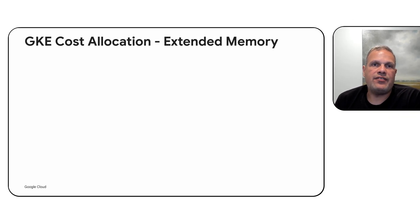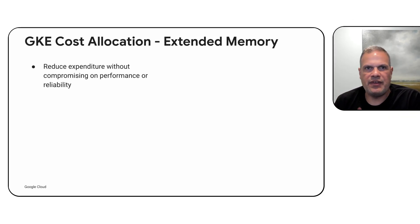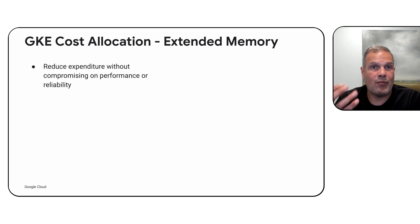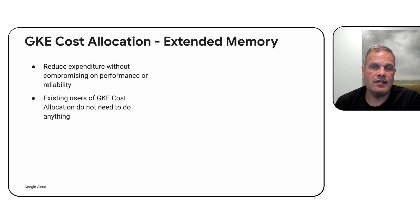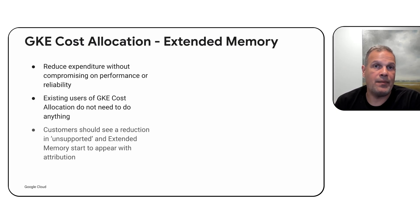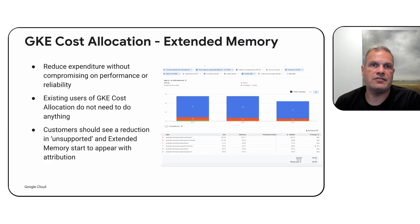Also in the realm of costs, GKE Cost Allocation has recently added support for extended memory. Certain VM types allow you to have extra memory, and previously we did not account for this when allocating cost to specific workloads — these showed up as unsupported. We can now allocate that full cost to the proper workload or namespace.